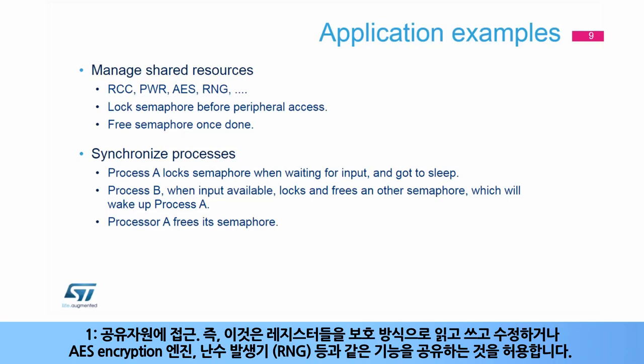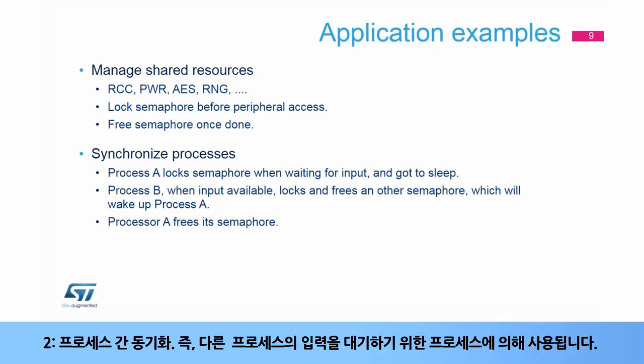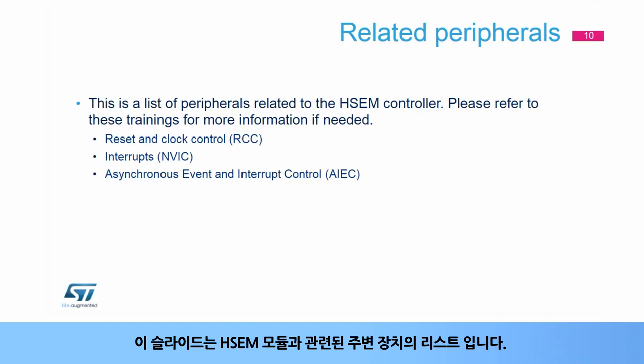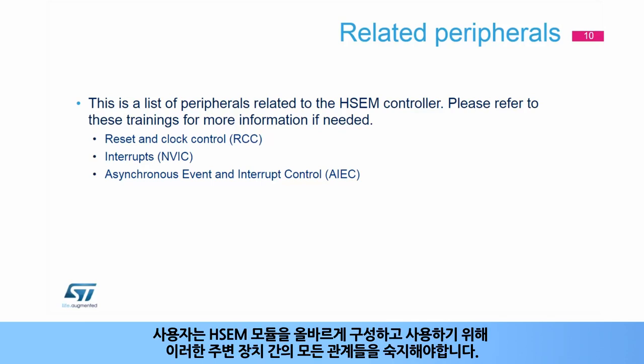Semaphores can be used to handle: 1. Access to shared resources — this allows you to read, modify, and write registers in a protected way, or to share functions like the AES encryption engine, random number generator (RNG), etc. 2. Synchronization between processes — used by a process to wait for input from another process. Here is a list of peripherals related to the HSEM module. Users should be familiar with all the relationships between these peripherals to correctly configure and use the HSEM module.